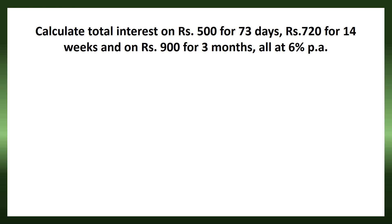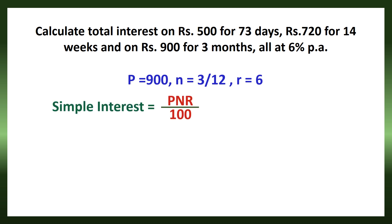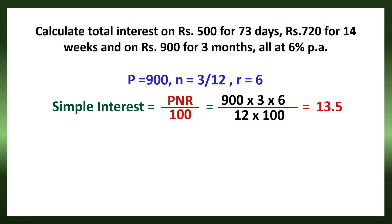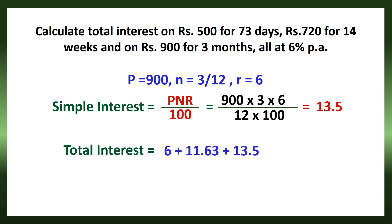Coming to the third part: P is 900 rupees, N is 3 months. Months are converted to years as 3 divided by 12, since there are 12 months in a year. R is 6% per annum. Applying in the formula: 900 into 3 into 6 divided by 12 into 100, which gives 13.5 rupees. The total interest is 6 plus 11.63 plus 13.5, which equals 31.13 rupees.